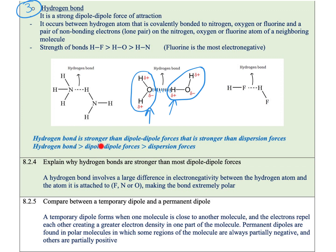The hydrogen bond is the strongest amongst all intermolecular forces. Then comes dipole-dipole forces, and the weakest are the dispersion forces. Importantly, intramolecular forces that exist within a molecule are always stronger than any type of intermolecular forces that exist between molecules. Hydrogen bonds are stronger than most dipole-dipole forces because a hydrogen bond involves a large difference in electronegativity between the hydrogen atom and the atom it's attached to — like fluorine, nitrogen, or oxygen — making the bond extremely polar, creating delta plus on hydrogen and delta minus on nitrogen, fluorine, or oxygen.